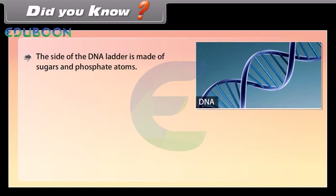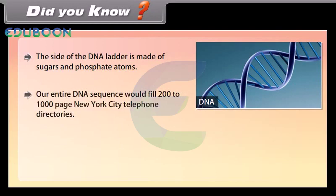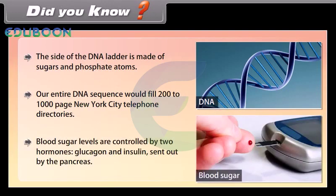Did you know? The side of the DNA ladder is made of sugars and phosphate atoms. Our entire DNA sequence would fill 200 to 1,000-page New York City telephone directories. Blood sugar levels are controlled by two hormones, glucagon and insulin, sent out by the pancreas.